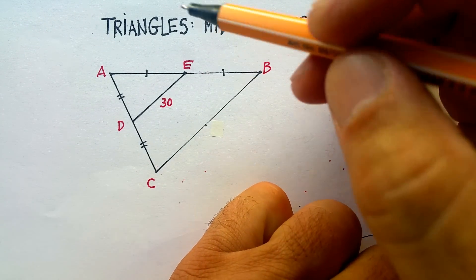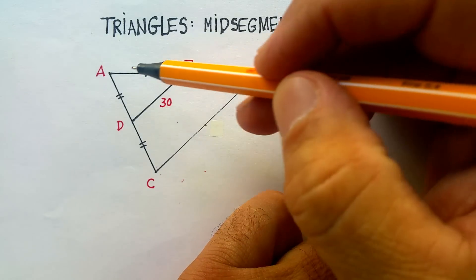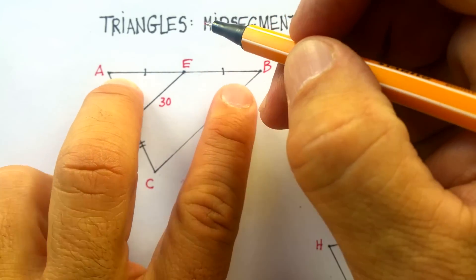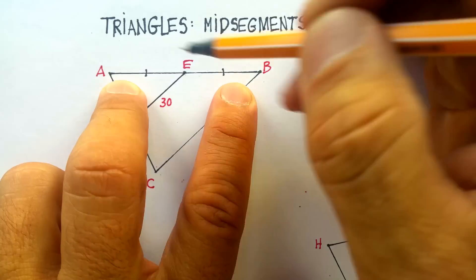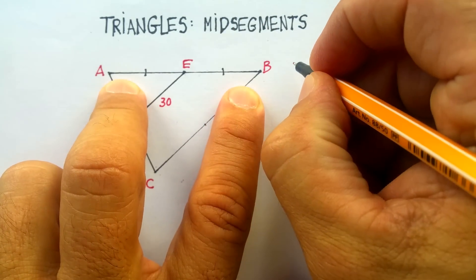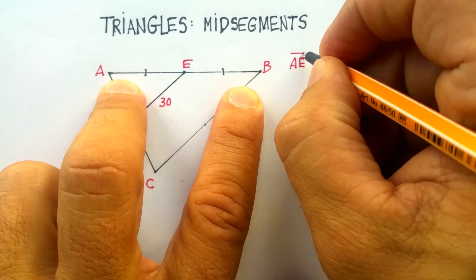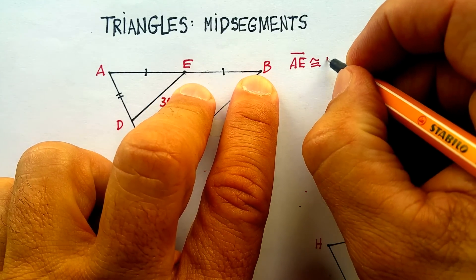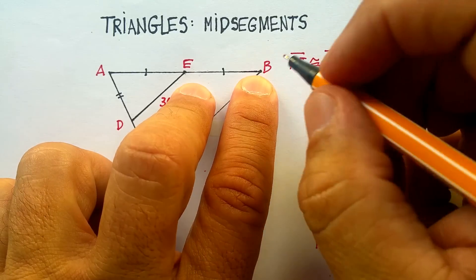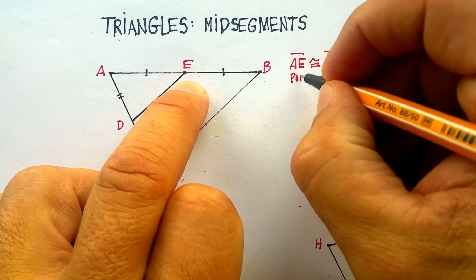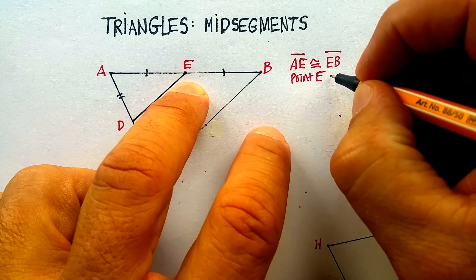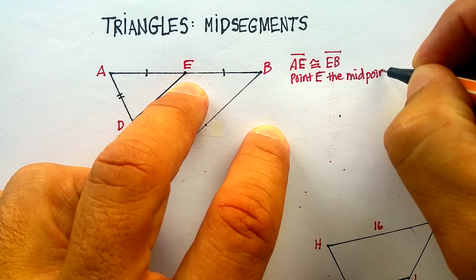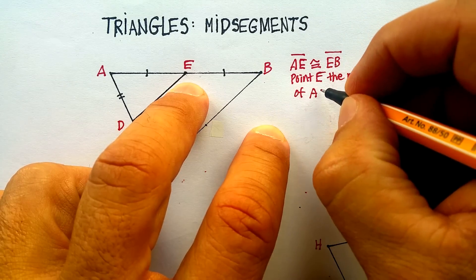So what is a mid-segment? Basically, when you go to a side of a triangle and you cut it exactly in half, the mid-segment is that point which divides that side into two equal halves. For example, line segment AE is congruent to line segment EB, which makes point E the mid-point of line segment AB.